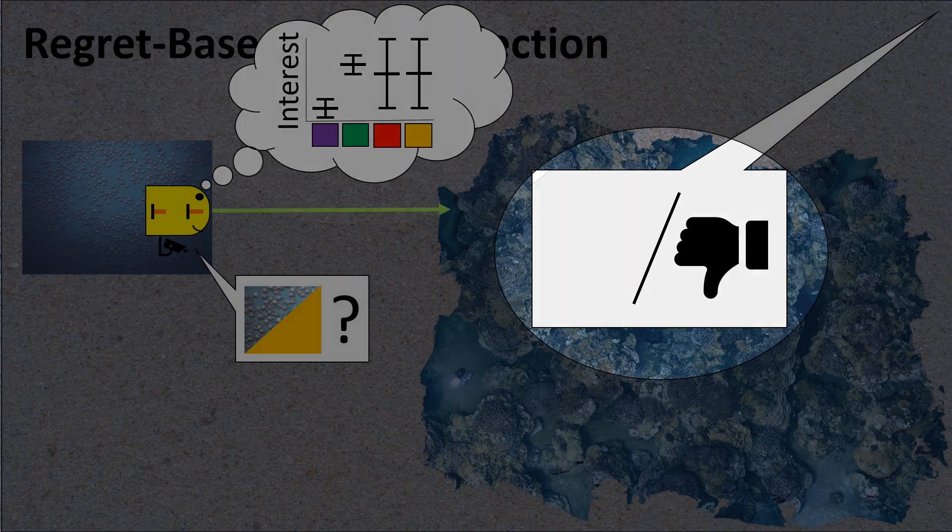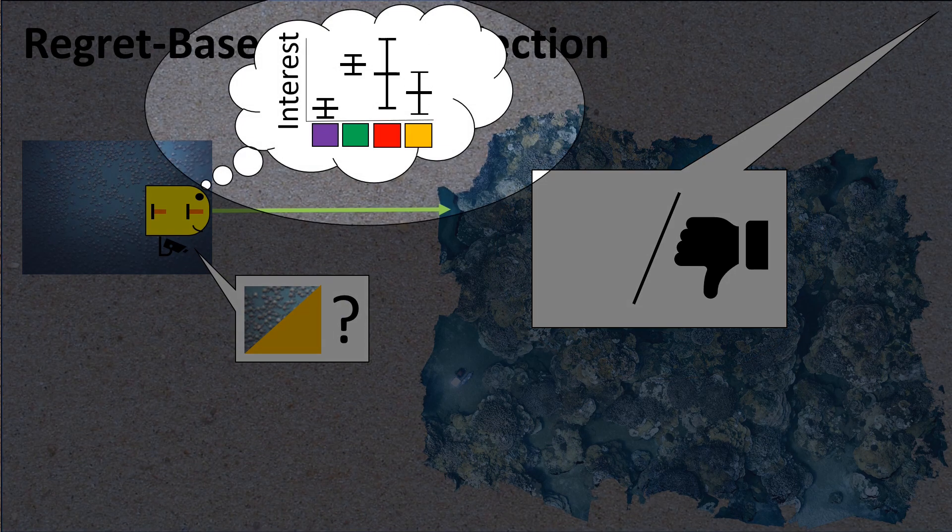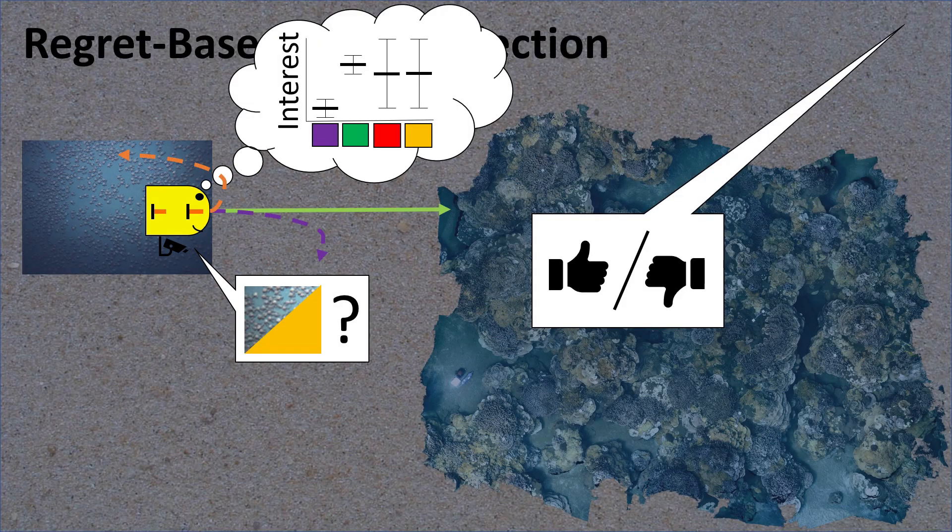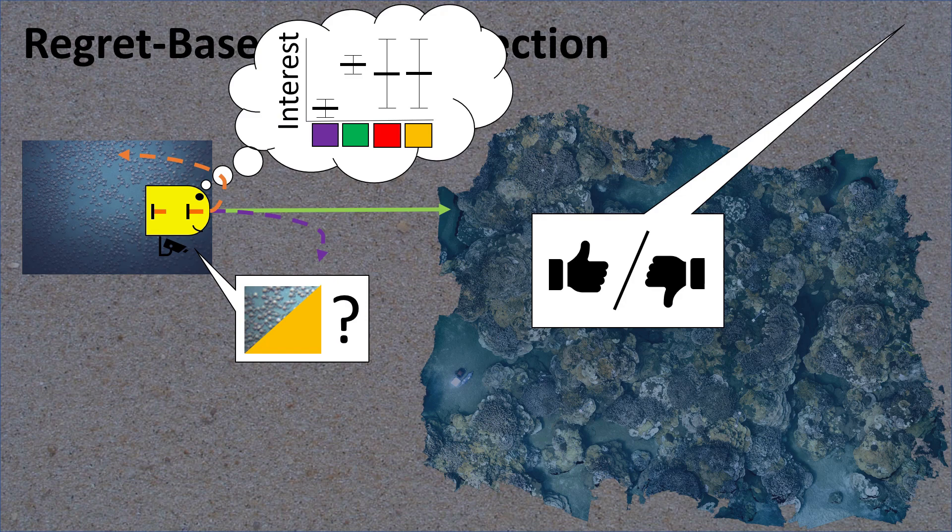On the other hand, if it wrongly assumes that they are interesting, the scientist may be annoyed to find that his robot got distracted by a bunch of crabs. This means the robot might really regret not asking the scientist about crabs. On the other hand, the robot does not have much regret for not asking the scientist about corals at this point in time.